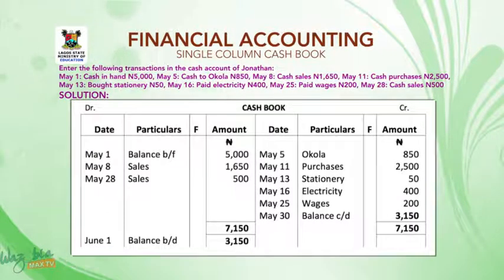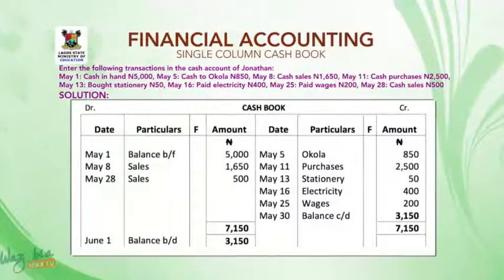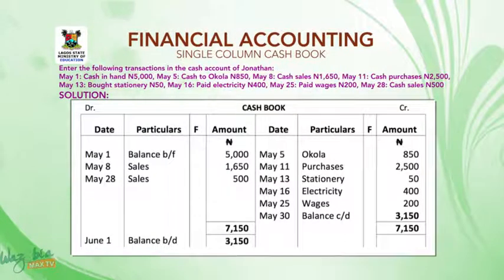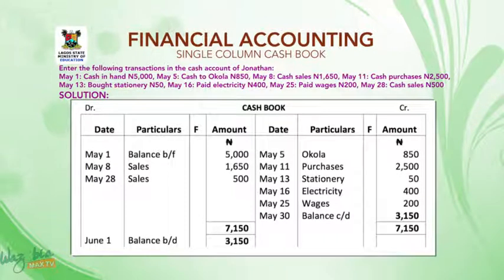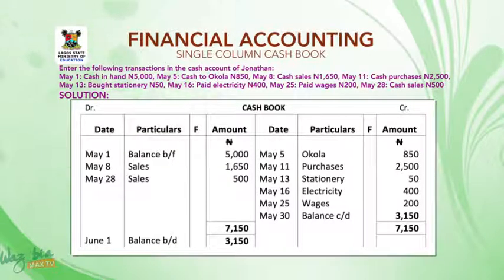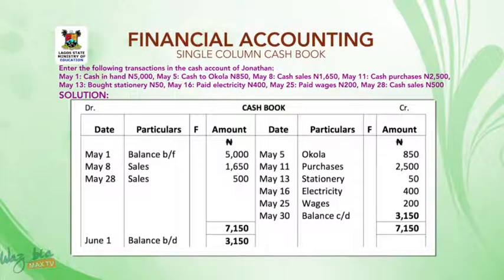May 8, cash sales, 1,650 naira — this means you sold goods worth 1,650 naira in cash. Money comes in, so it is a receipt and you are going to debit it. On the debit side, under date write May 8; under particulars write 'sales'; and under the amount write 1,650 naira.